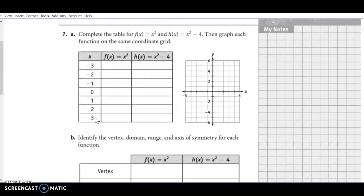We could say the same thing with x squared minus 4, so 9, 4, 1, 0, 1, 4, 9. And when we subtract 4, we get 5, 0, negative 3, negative 4, negative 3, 0, and 5.